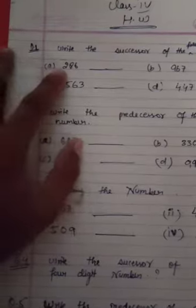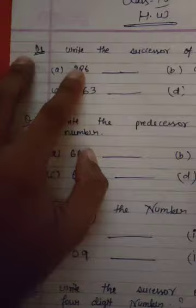Last fourth math homework: write the successor of the following numbers. Look at question number a, 286. You have to add one to this number and your answer will be here.